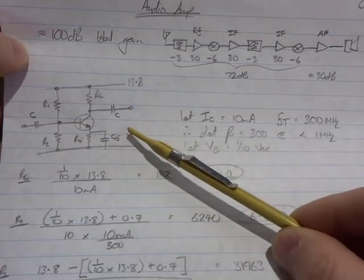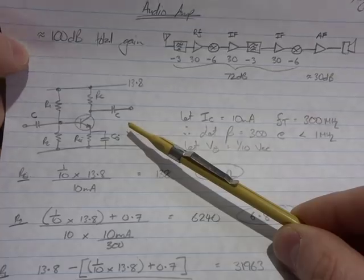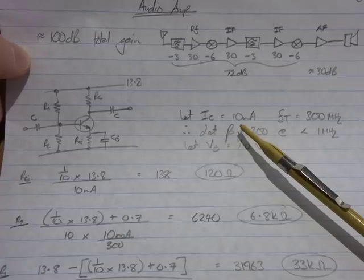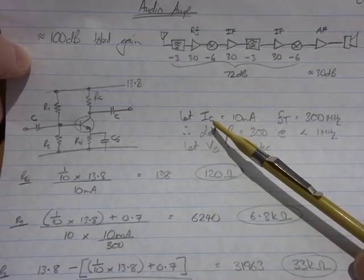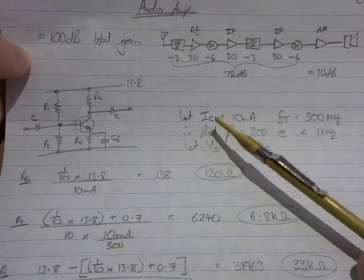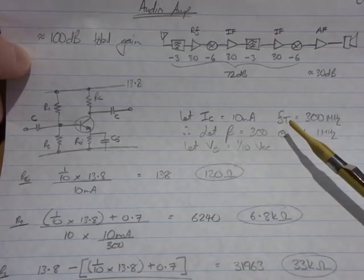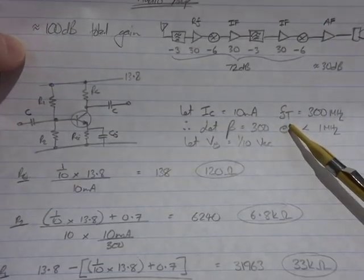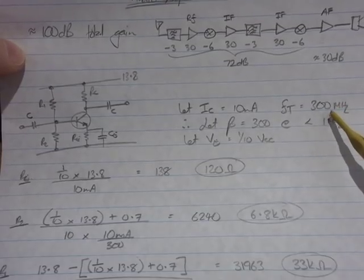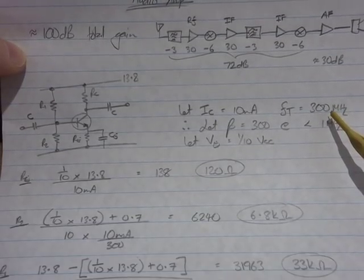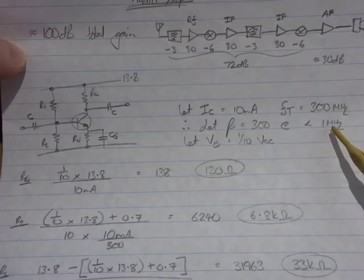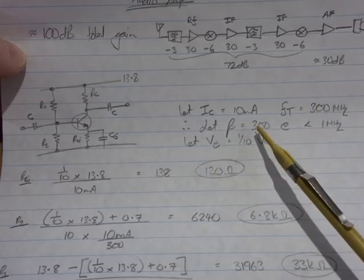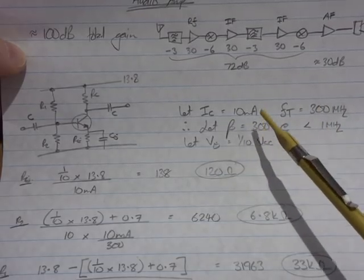just set up to be a standard Class A amplifier. In terms of just setting some givens to design against, decided to set the quiescent collector current at 10 mA. Now the 3904 from the specification sheet has an FT of 300 MHz, and because we're down at audio frequencies, we'll just use the 1 MHz gain, which will be 300.